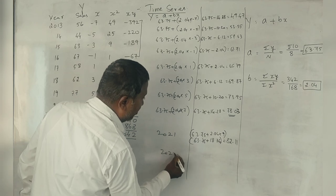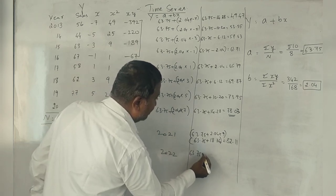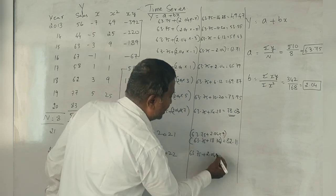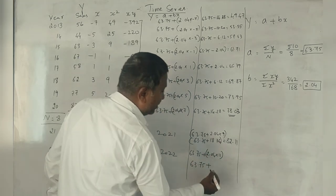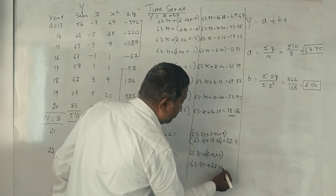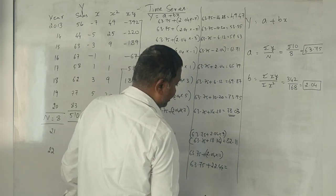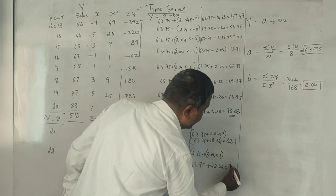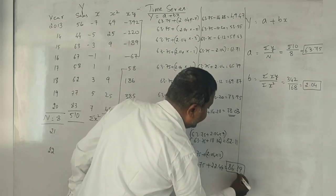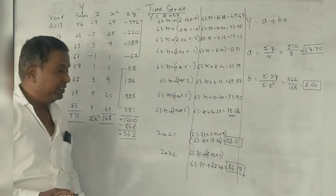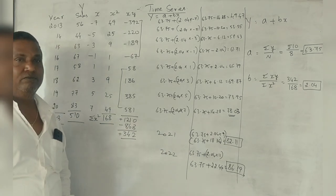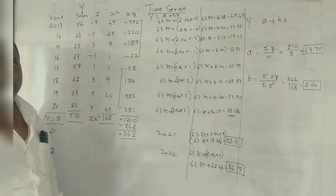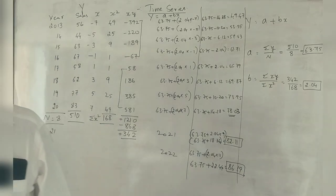Next, for 2022: 63.75 plus 2.04 into 11 equals 63.75 plus 22.44 equals 86.19. This completes the forecast for 2022.